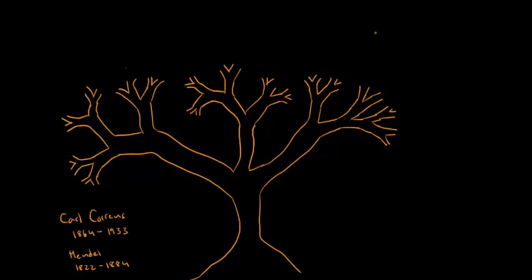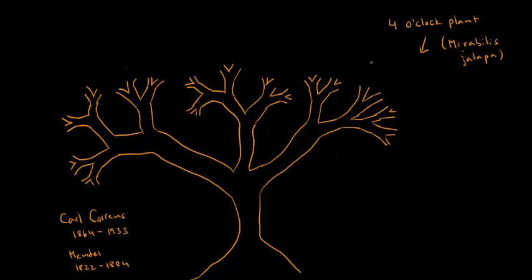Karl Korins did a lot of experiments with this plant called the four o'clock plant. That's how we know it, and the scientific name for the four o'clock plant is Mirabilis jalapa. So he did a lot of experiments with the four o'clock plant.